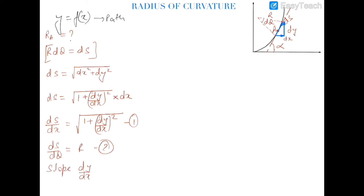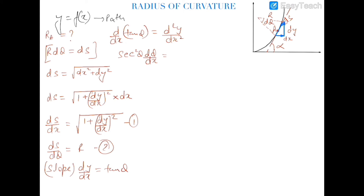Now we know that the slope is dy/dx. Differentiating with respect to x using the chain rule, since theta is a variable, we get: sec²θ · (dθ/dx) = d²y/dx². The value of sec²θ can be written as 1 + tan²θ, so: (1 + tan²θ) · (dθ/dx) = d²y/dx².